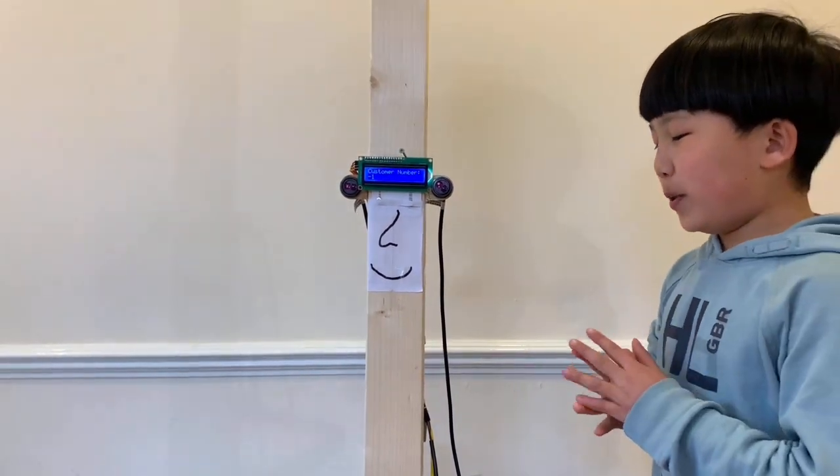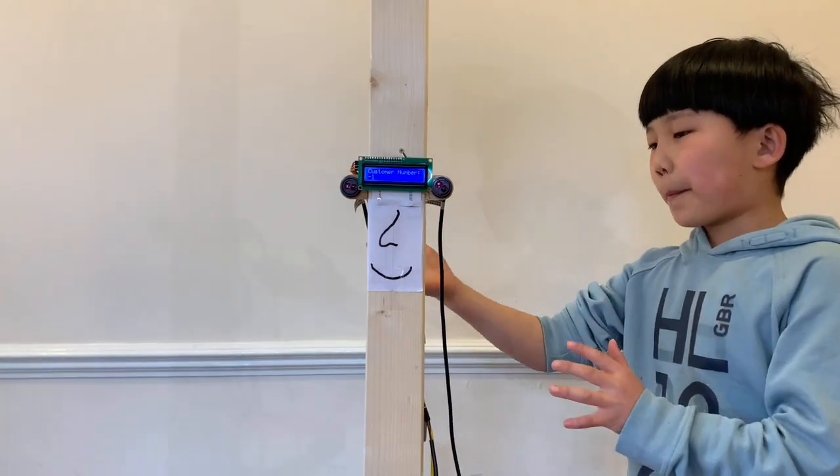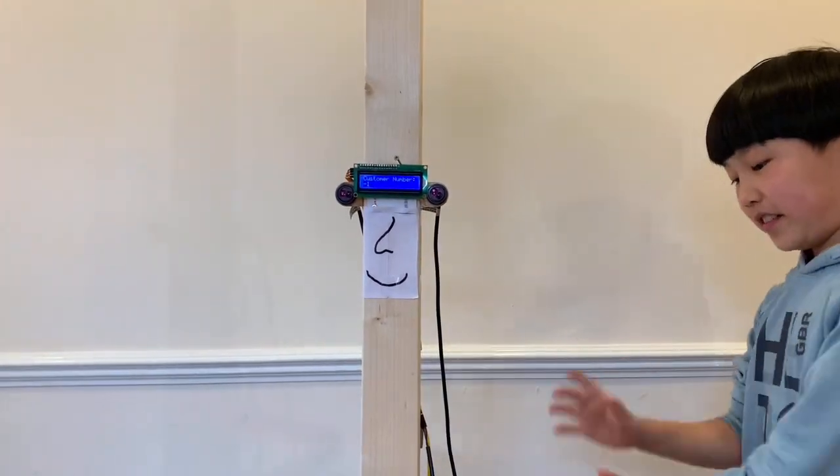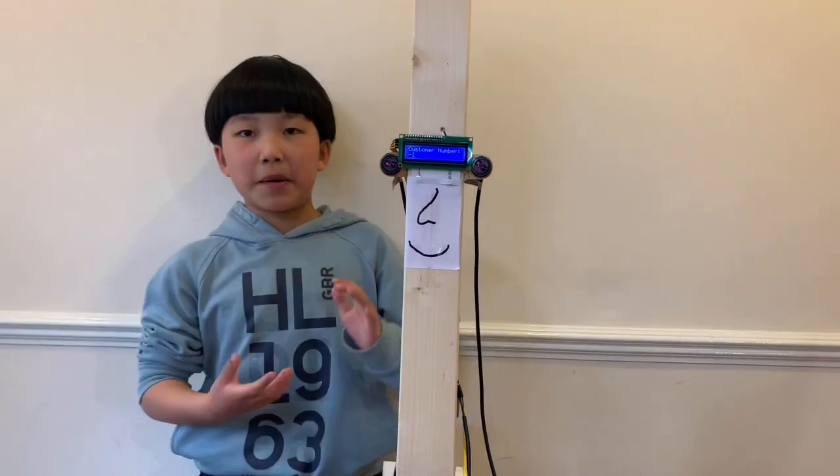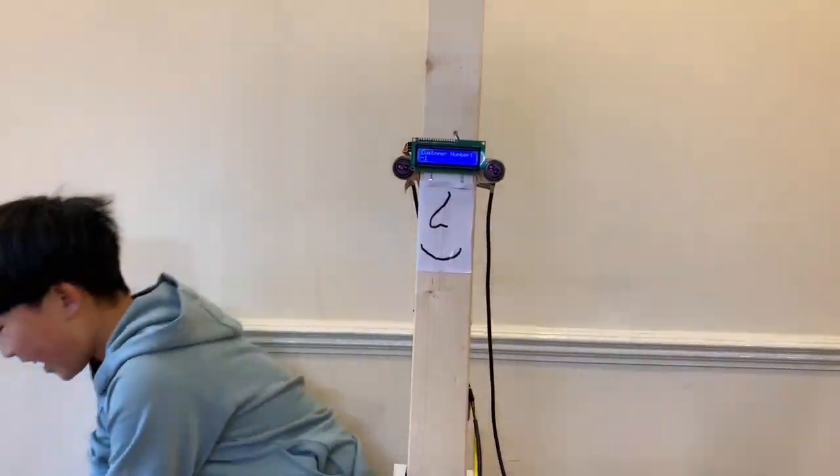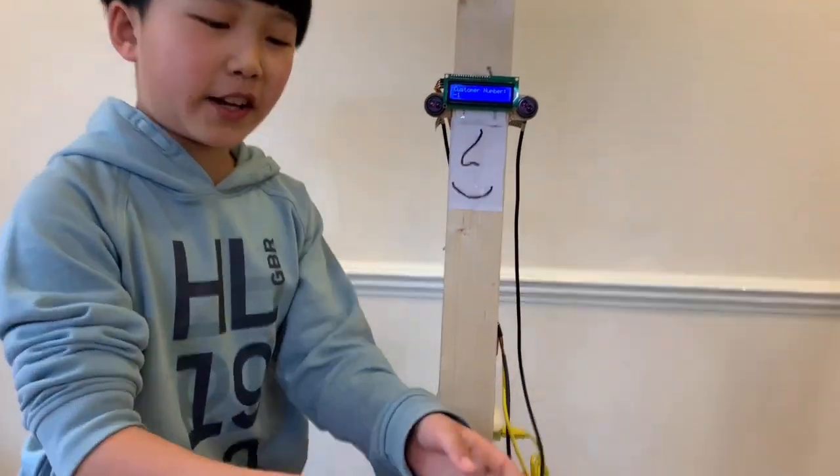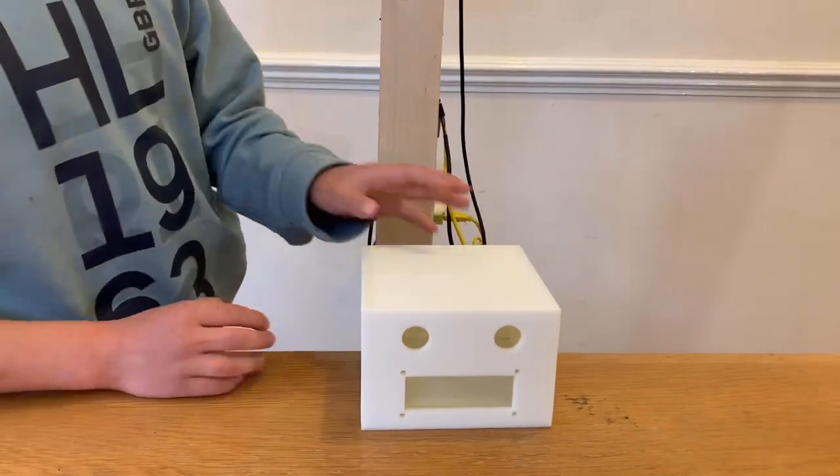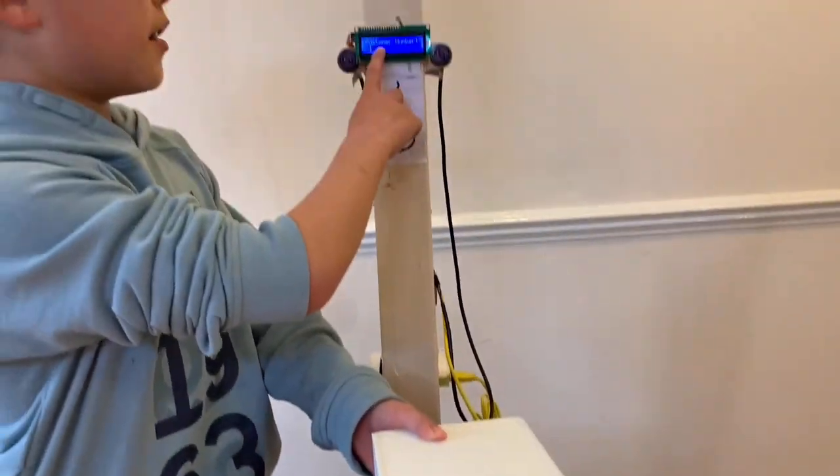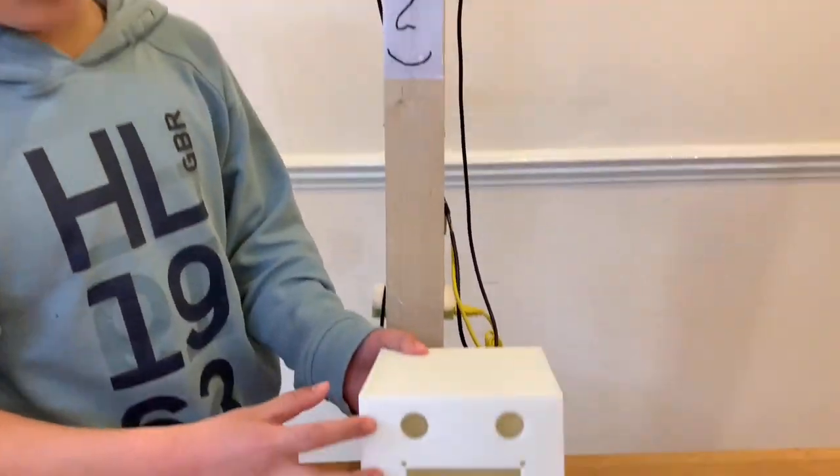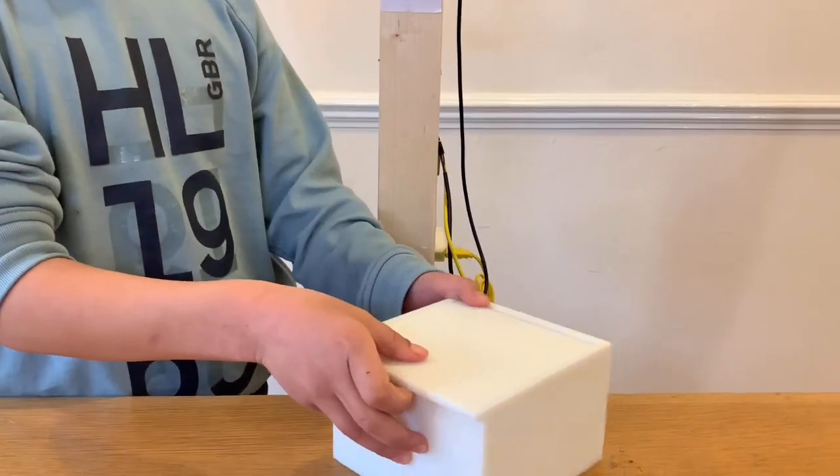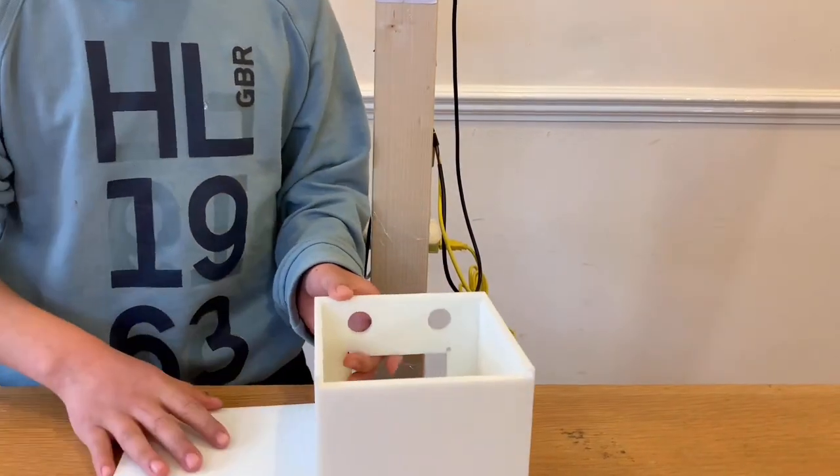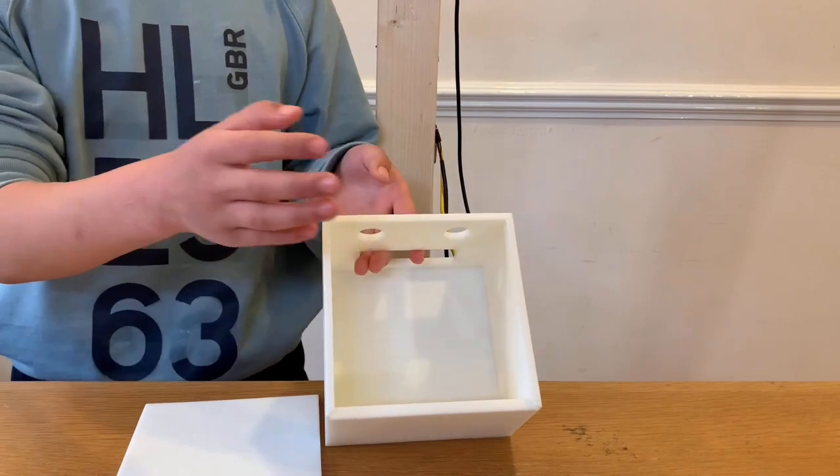We want to put this massive stand with all of these electronics in it into a more compact box. This is what I've got. It looks like a face because this is where the LCD is supposed to go and this is where the sensors are supposed to go. Inside, if I take this off, there's some space for the breadboard at the back and the Arduino at the back.